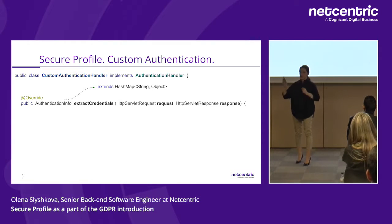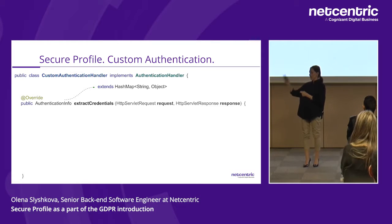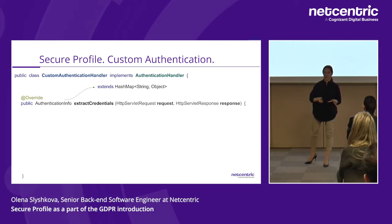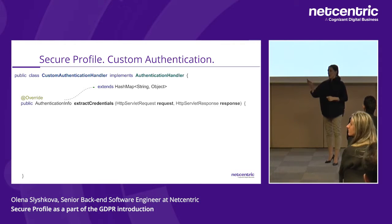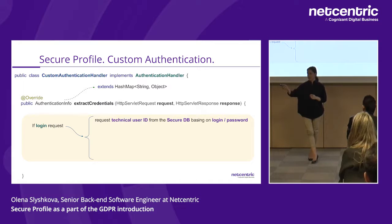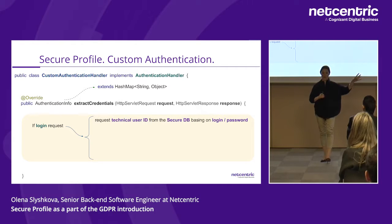In extractCredentials, we need to recognize who the user is. We receive the request and must return AuthenticationInfo, which is essentially a map where we put the user credentials. When the user logs in, we send a request to the secure system — with the real user login and password from the incoming request, without storing it anywhere in JCR — and receive back the technical user ID.